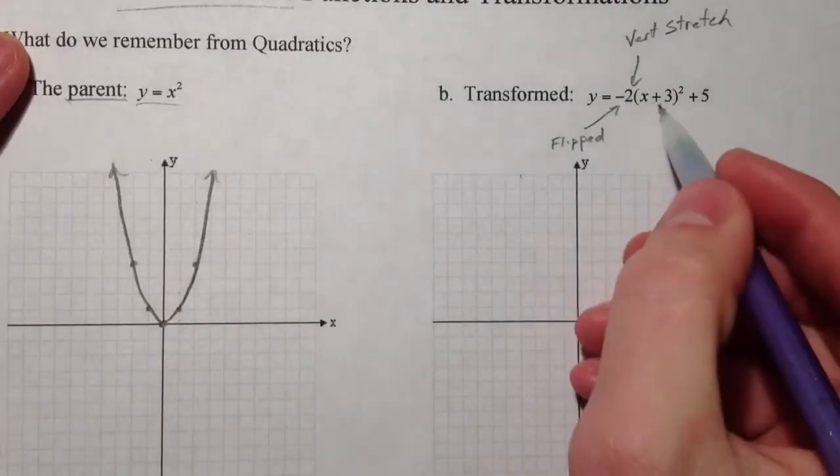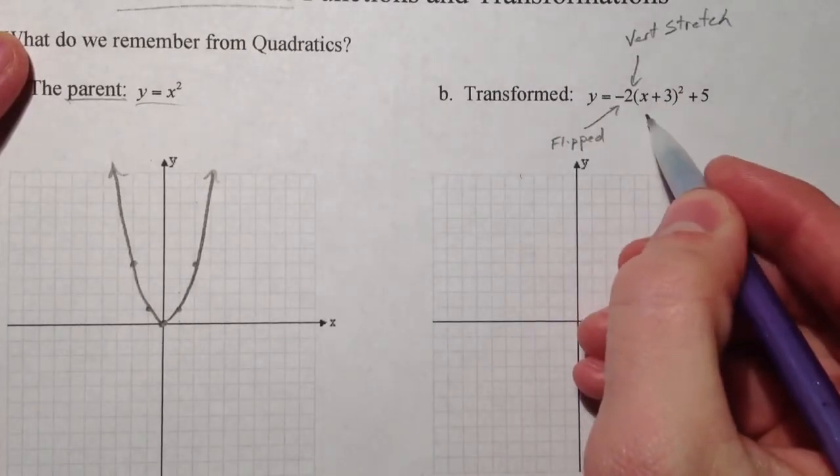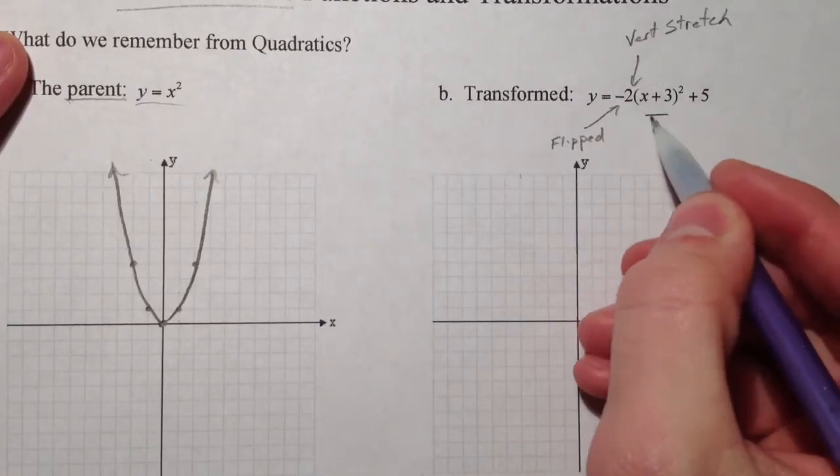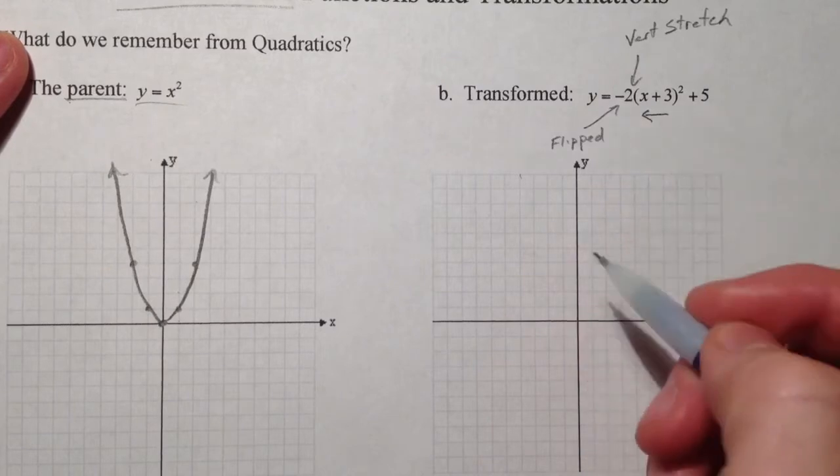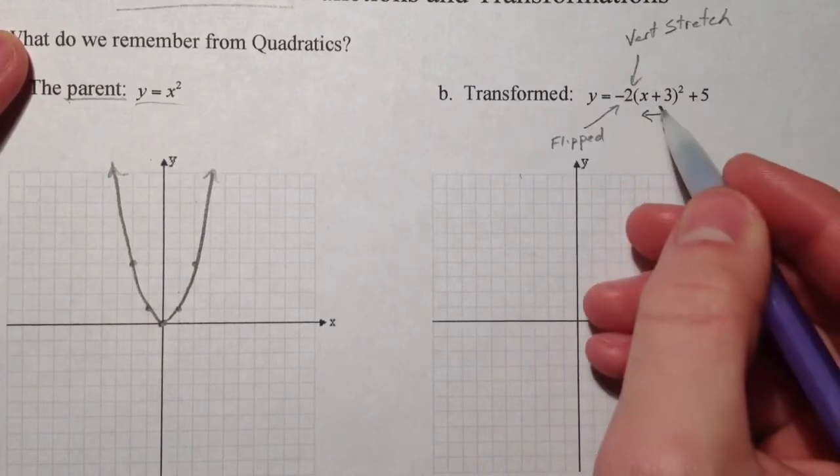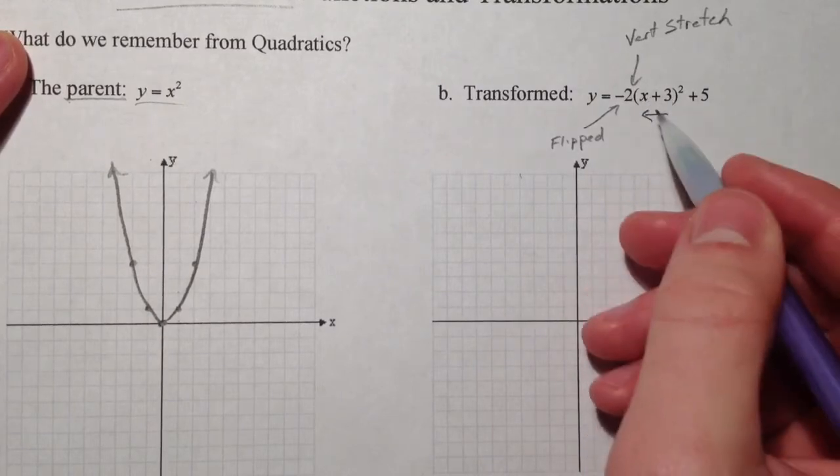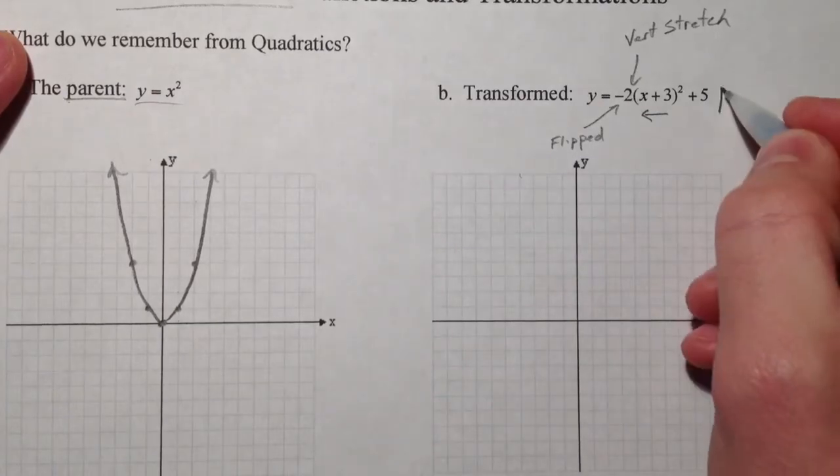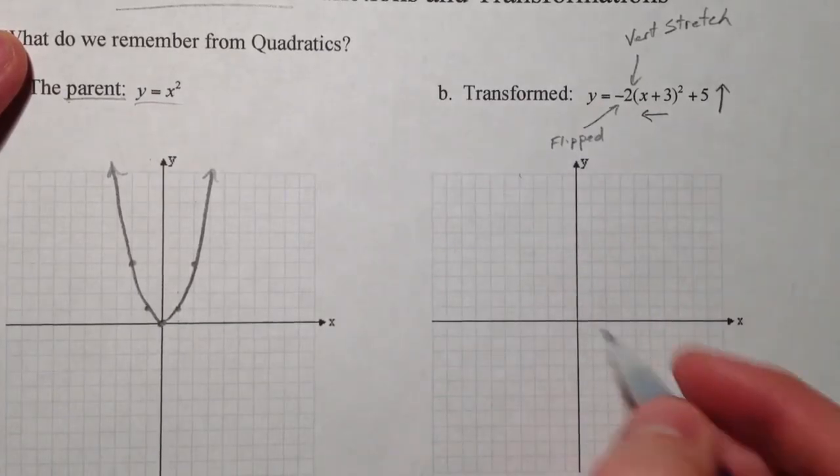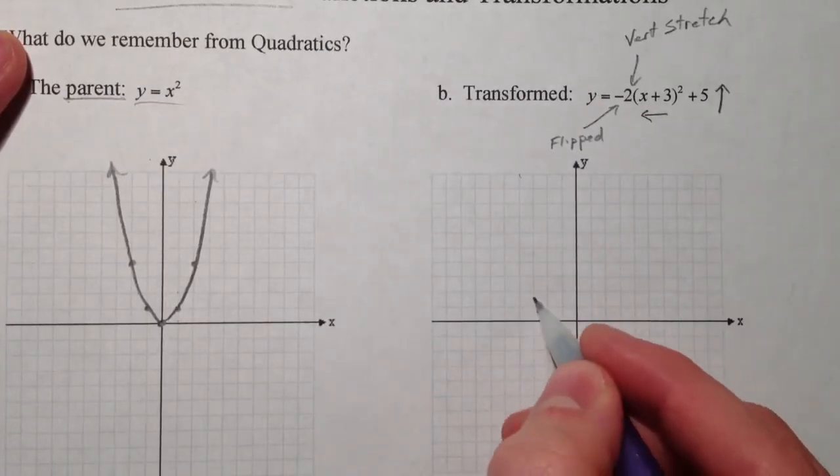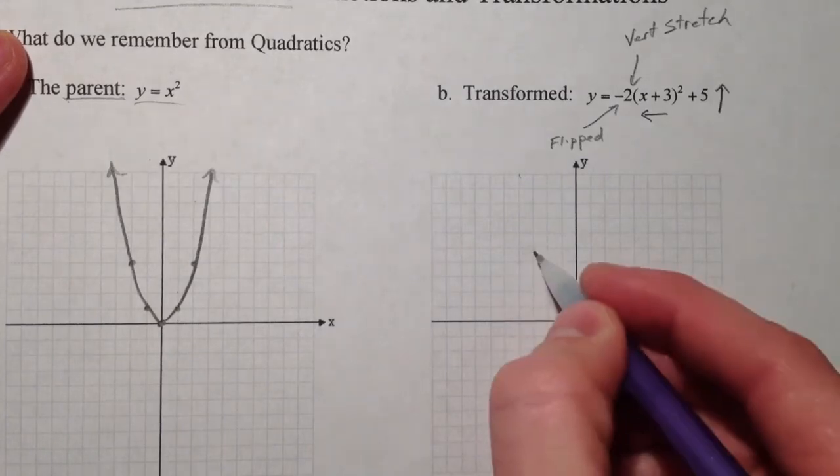So this one, the plus 3, horizontally it went left and right, because it's with the x, but it always moved it opposite of what we thought it would, because if you plug in negative 3 here, you're getting to the same spot. And the 5 moved it up 5. So 1, 2, 3, 4, 5.